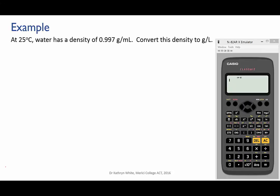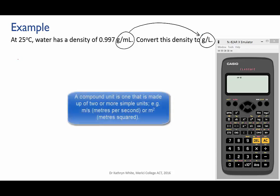So let's take this example. At 25 degrees Celsius water has a density of 0.997 grams per milliliter and we want to convert this density to grams per liter. So here we're converting from a compound unit of grams per mil to another compound unit grams per liter.